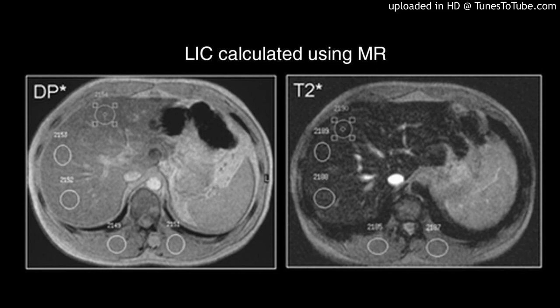Conclusions: Cardiac T2 MRI values showed a poor correlation with hepatic T2 MRI values and ferritin levels. Accurate assessment of cardiac iron overload in patients with BTM can only be done using the T2 MRI technique. Additionally, HFE-H63D is a significant determinant factor for elevated ferritin levels in BTM patients.